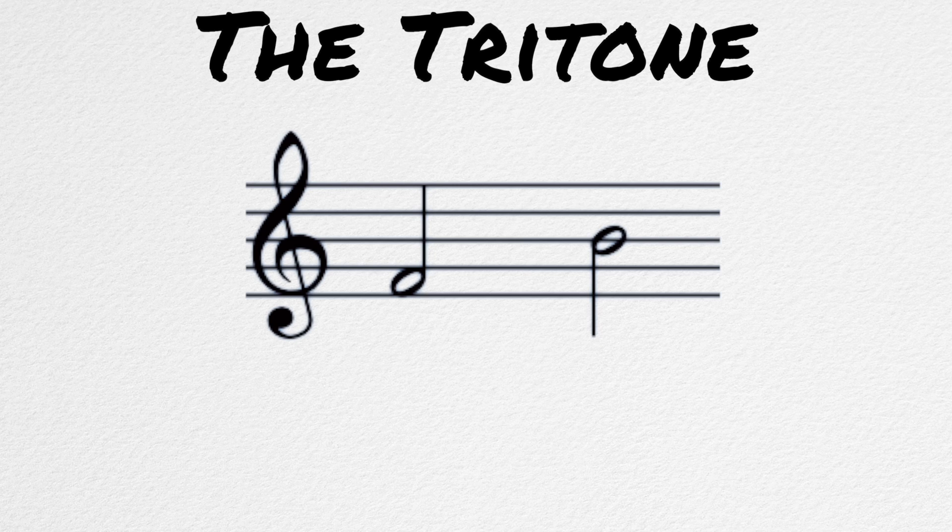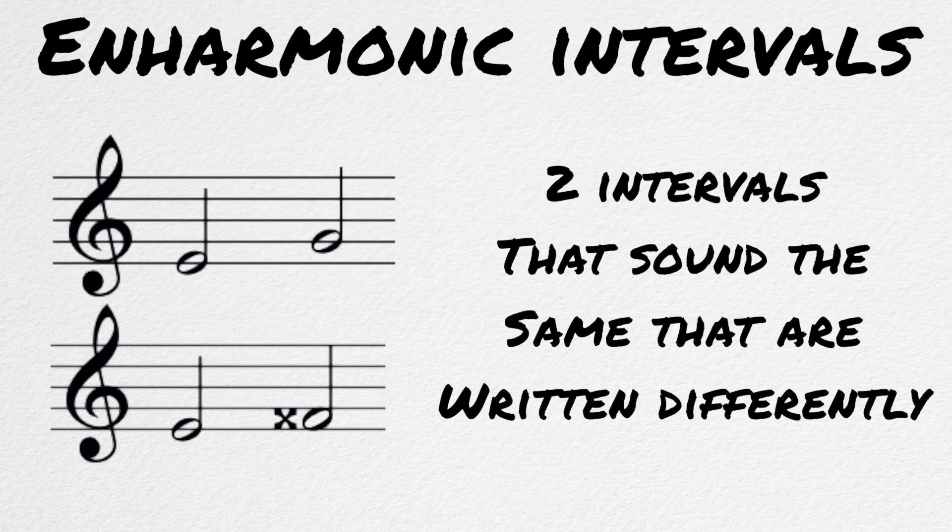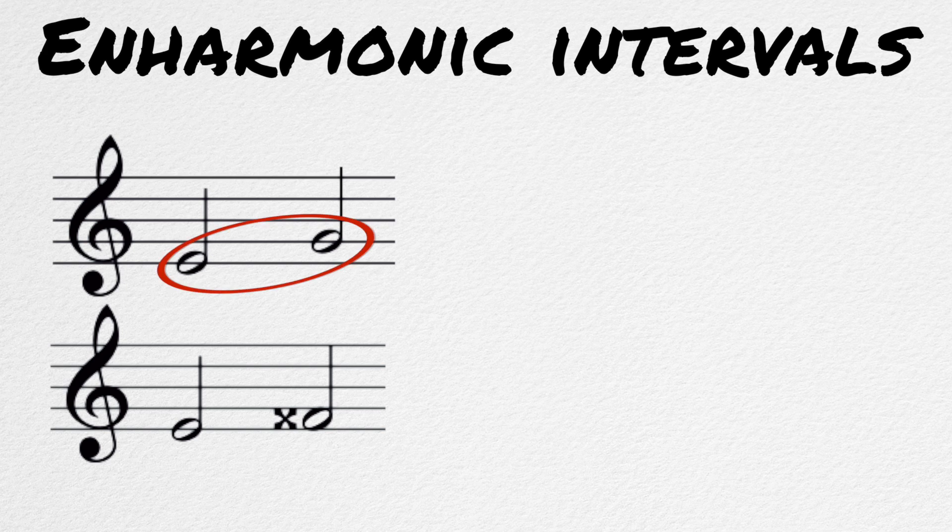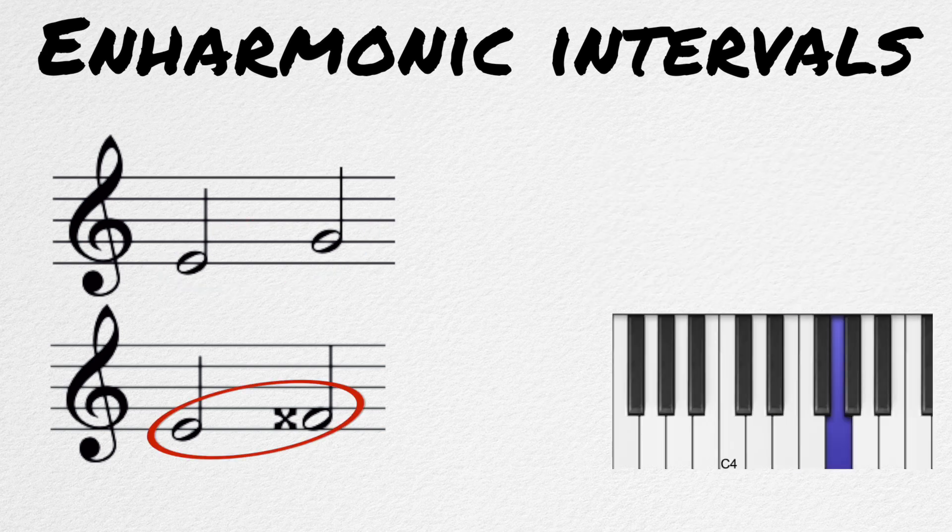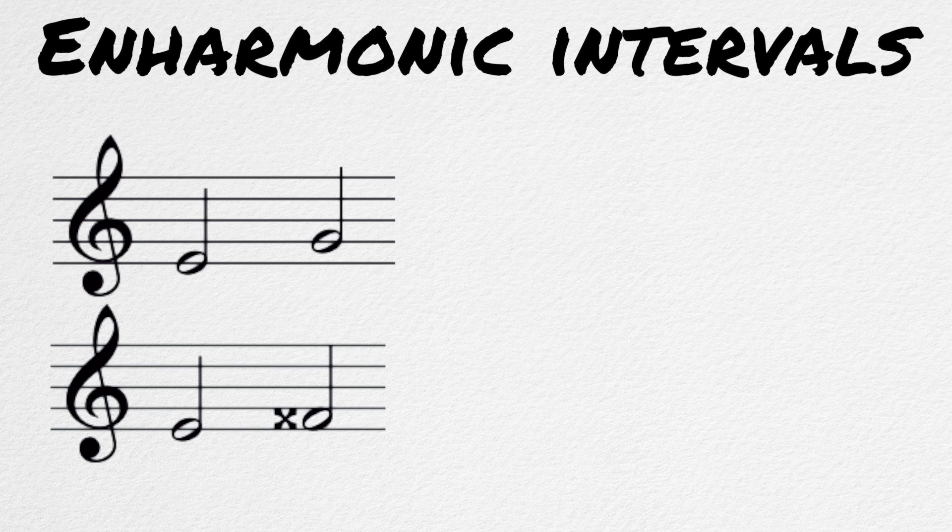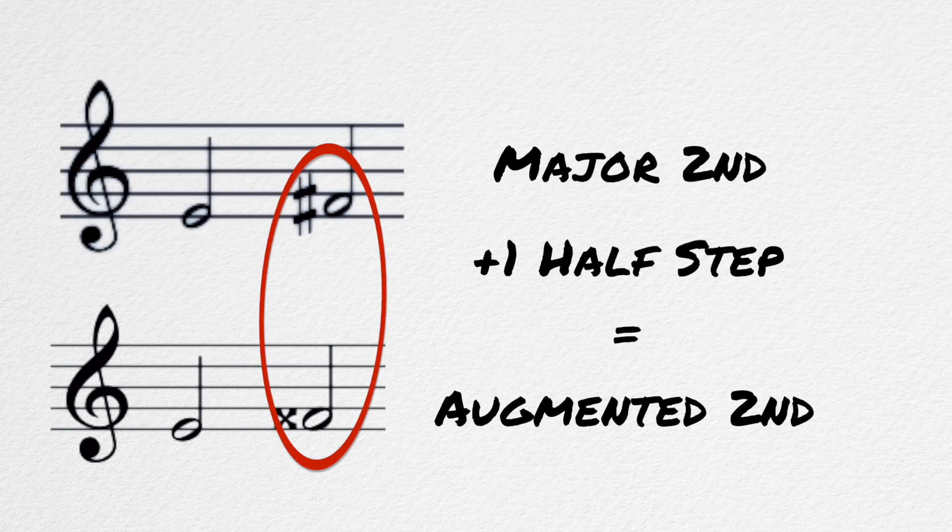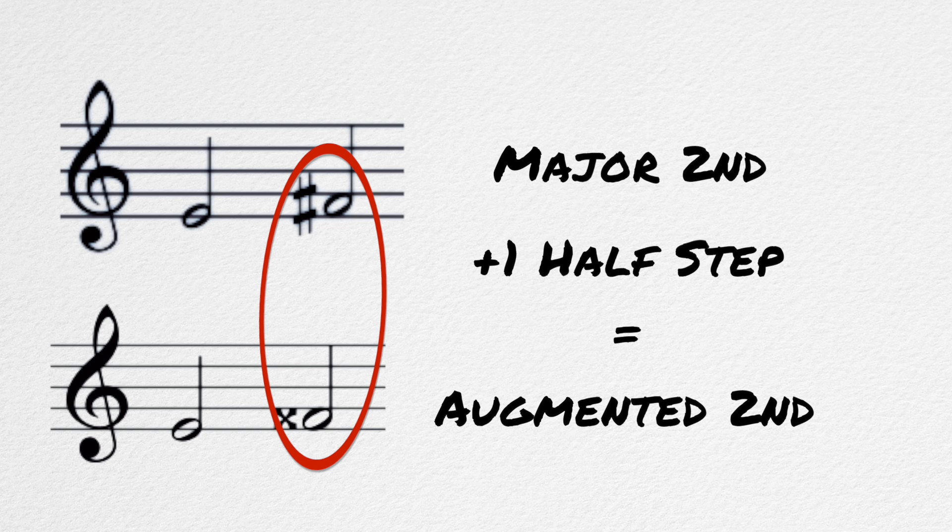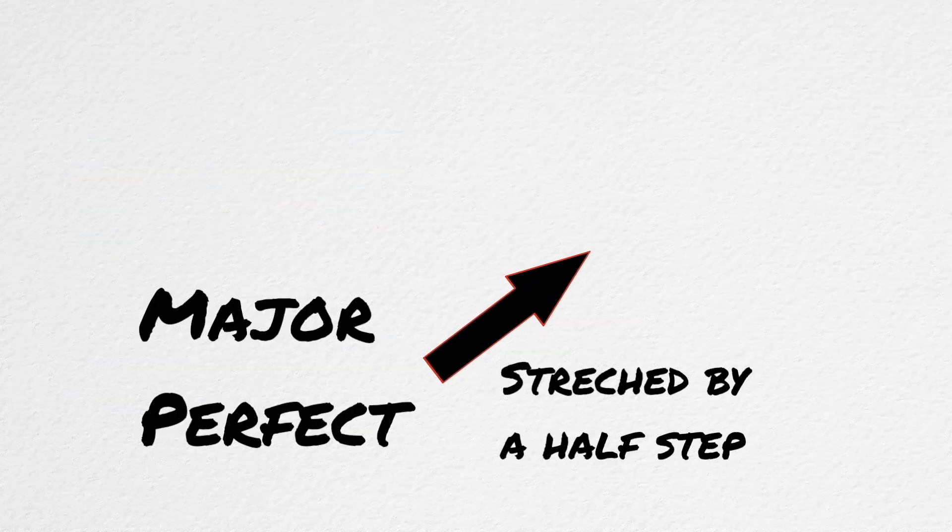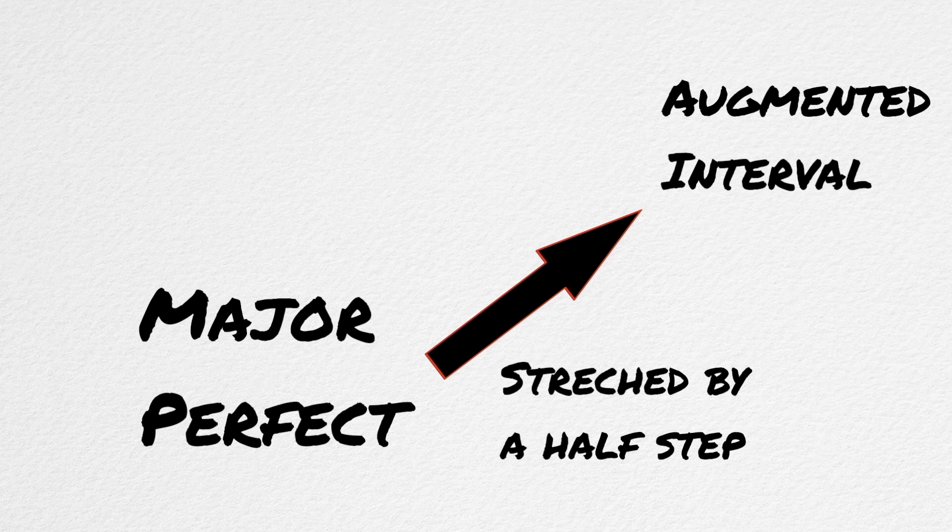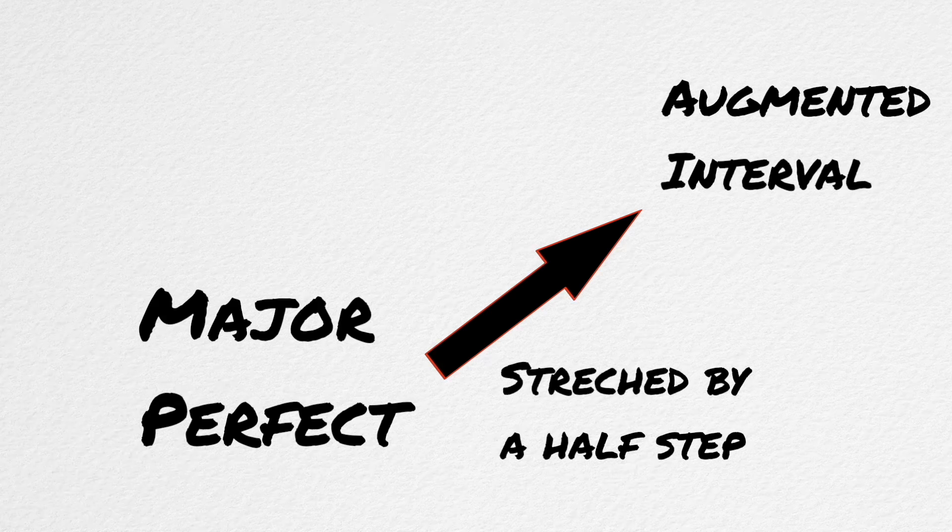But for the rest of the augmented and diminished intervals, we also need to understand the idea of enharmonic intervals. An enharmonic interval is one that is written two different ways but sounds the same. For example, this interval and this interval sound the same, but they're written differently. Really, all that is happening is that the major 2nd is being stretched by a half-step. And thus, augmented just means to stretch by a half-step. Any major or perfect interval that is stretched by an extra half-step is referred to as an augmented interval.